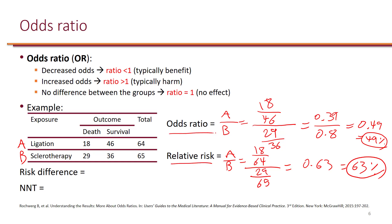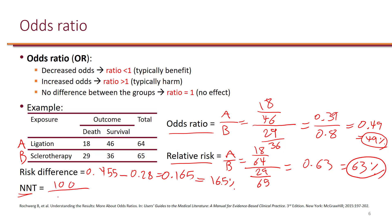Regardless of whether you have odds ratio or relative risk, when it comes to number needed to treat, you must use the risk difference. The risk difference here is 0.455 minus 0.28, which is 0.165, equivalent to 16.5%. The number needed to treat is 100 divided by the absolute risk difference of 16.5%, which gives 6.06 — always round up, so this is 7.